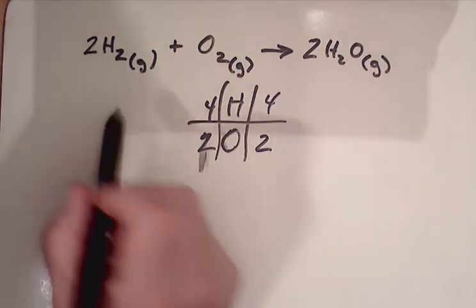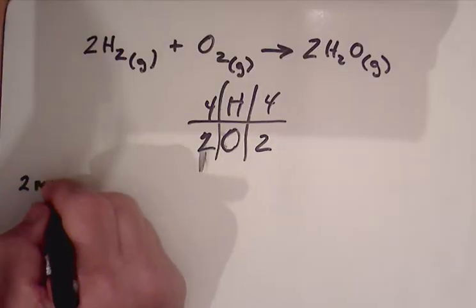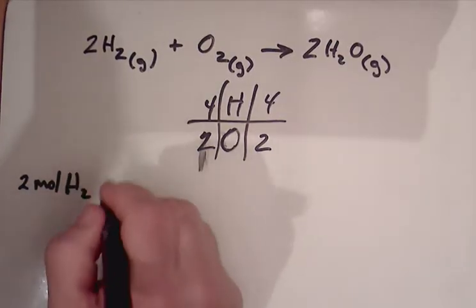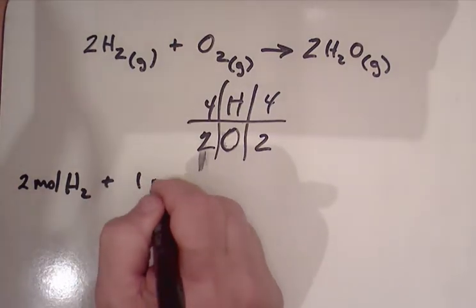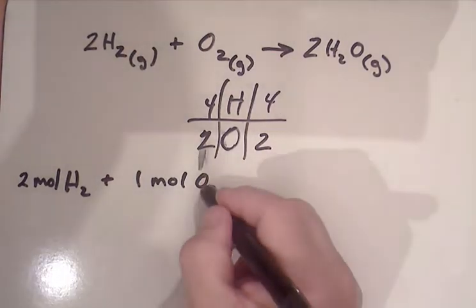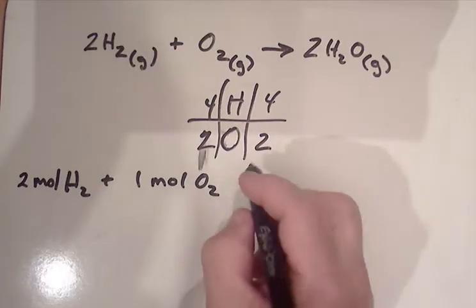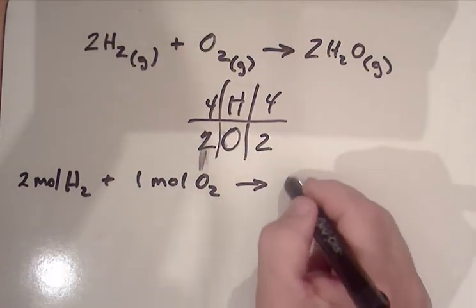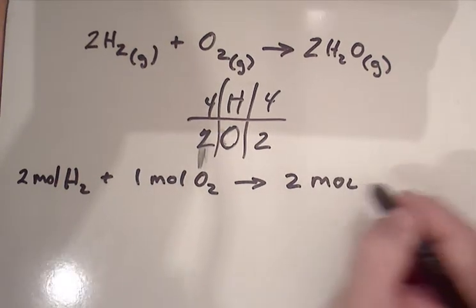If we look at this chemical formula, we can say that two moles of H2, hydrogen, plus one mole of diatomic, diatomic meaning two pieces of oxygen stuck together, combined to make two moles of water.